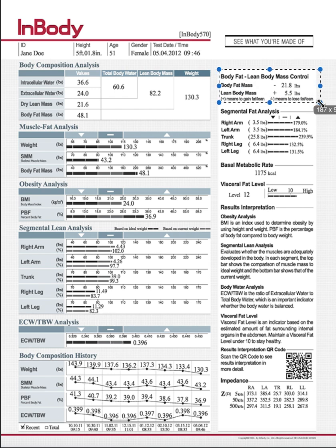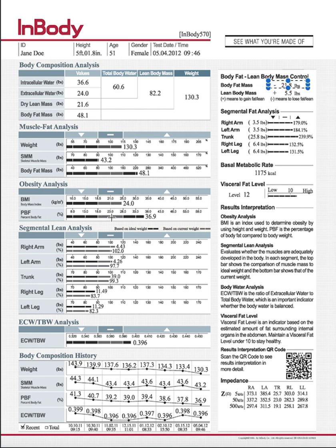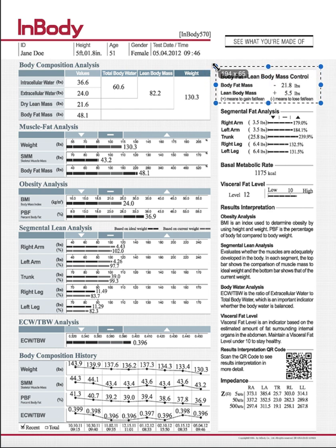This top block gives us a recommendation. It basically says if she lost 21.8 pounds of body fat, it would put her right in the middle of the healthy body fat percentage range we want. It also says she could gain 5.5 pounds of muscle — she's a little low on the muscle range — and gaining five pounds of muscle would put her right in the middle of where we want her. This will be a really important goal-tracking tool for us.